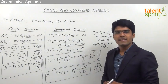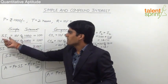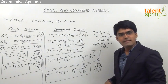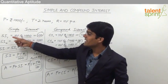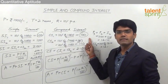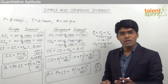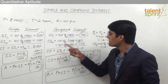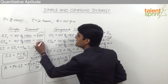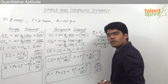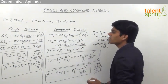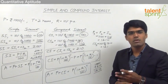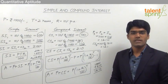One more important observation: the simple interest for the first year is 100 rupees and the compound interest for the first year is also 100 rupees — there is no difference between SI and CI for a period of one year. This is because for the first year the principal is the same in both cases. The principal changes only from the second year onwards, which is why we see a difference: 100 rupees for SI in the second year versus 110 rupees for CI in the second year.